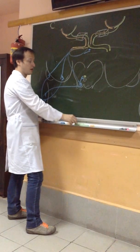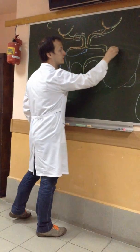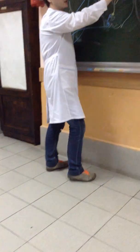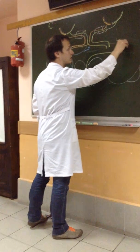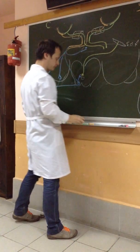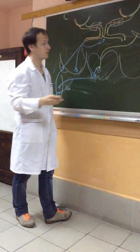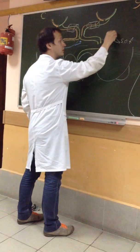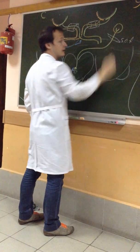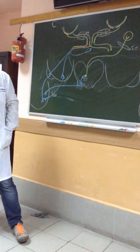From the parasympathetic nuclei of the midbrain, information travels from the cranial cavity through the superior orbital fissure to the orbit, to the ciliary ganglion.